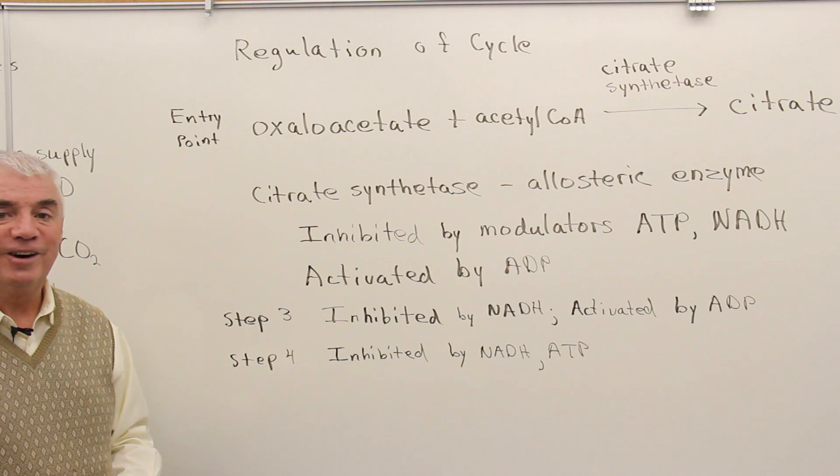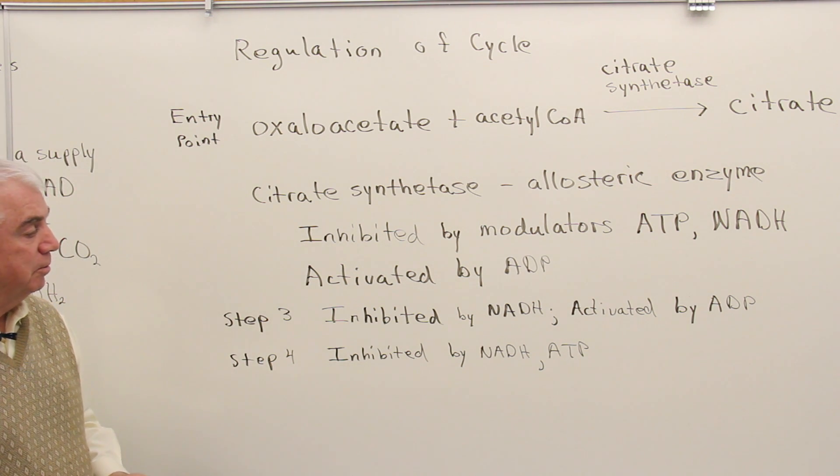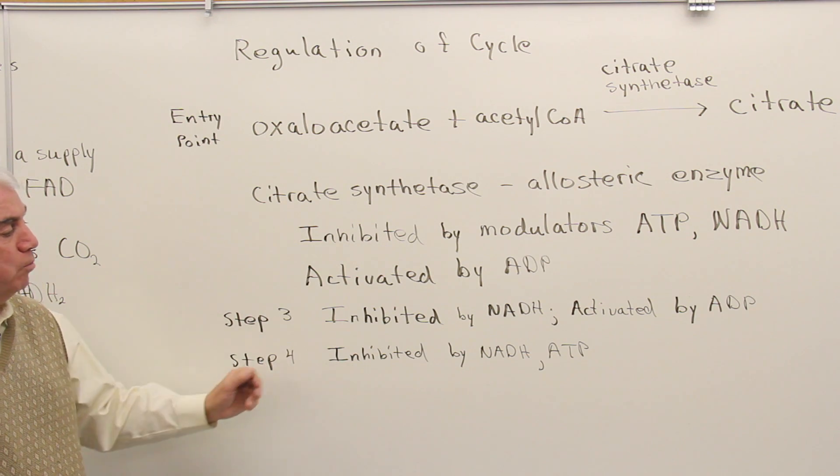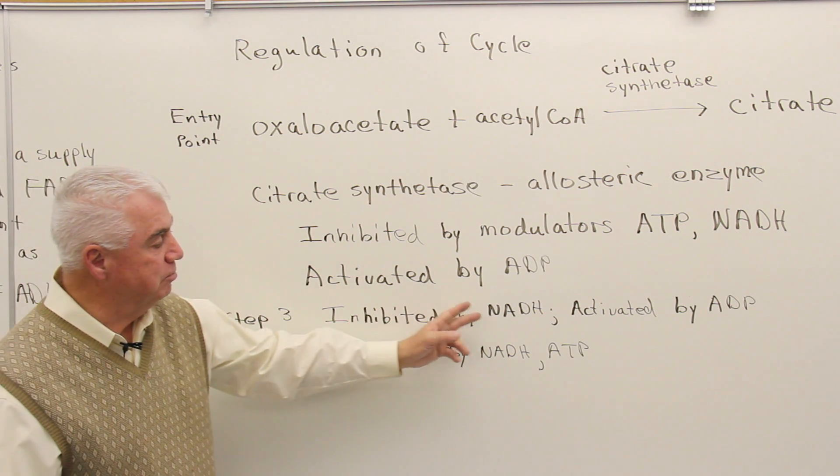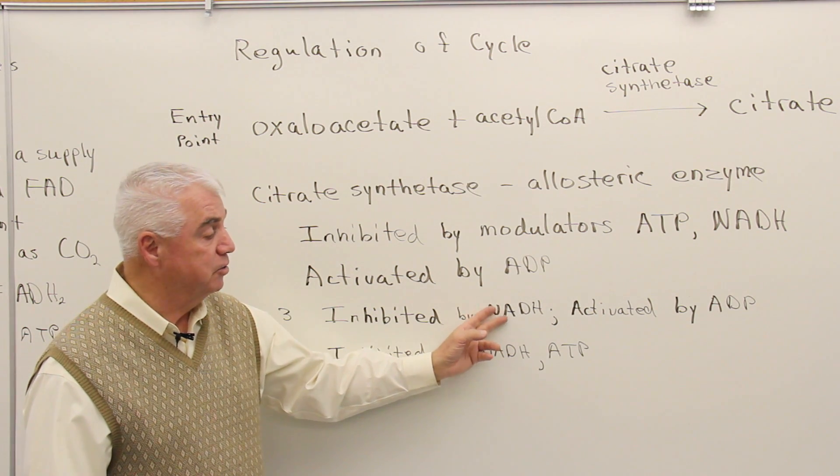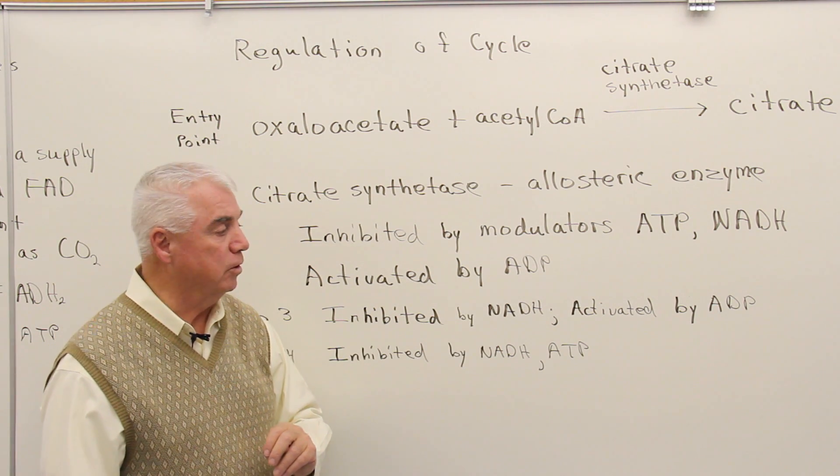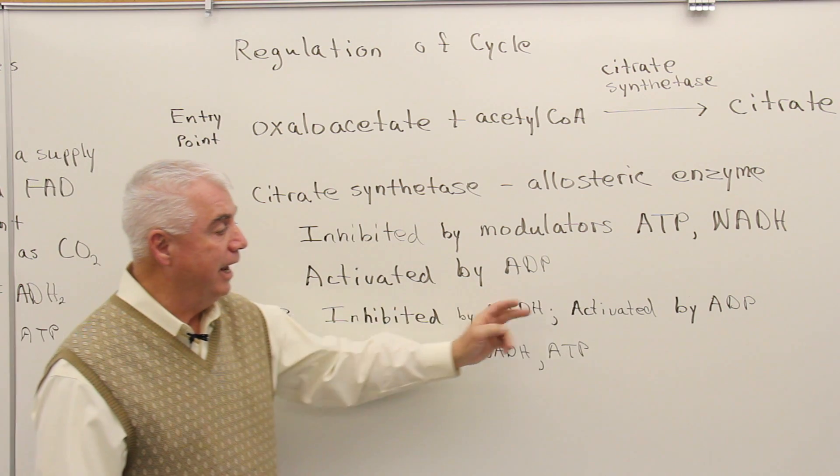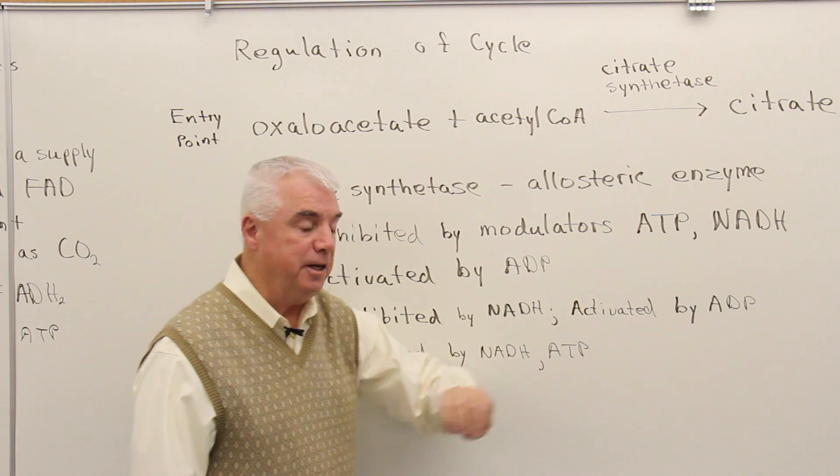Steps three and four regulate enzymes at those positions in the same way. They're inhibited by NADH when energy is high, so we don't need the citric acid cycle to work as efficiently. They're activated again by ADP.